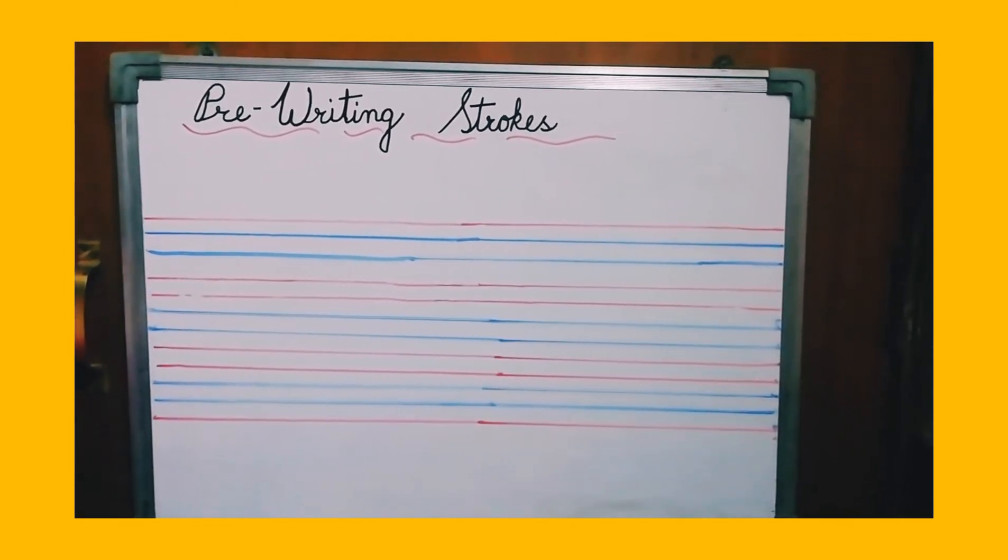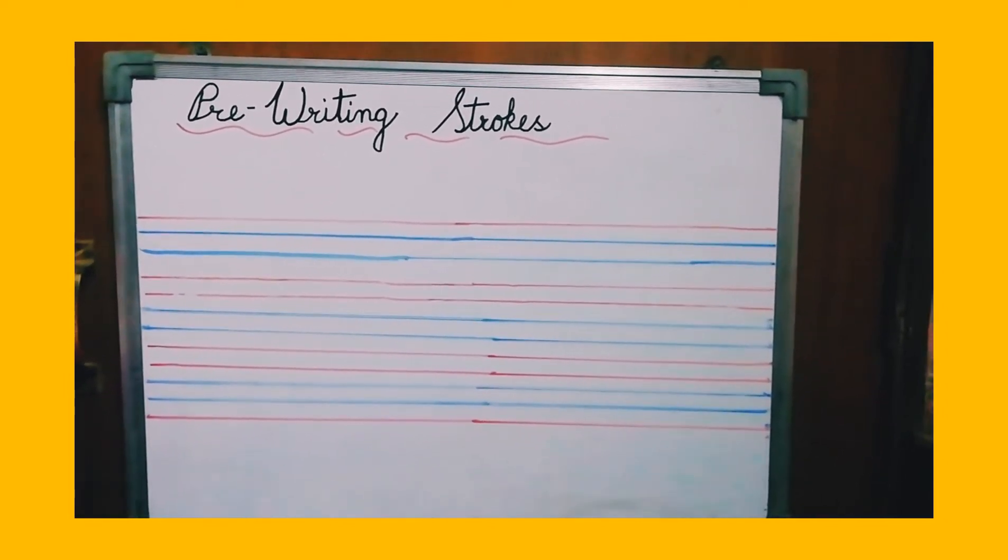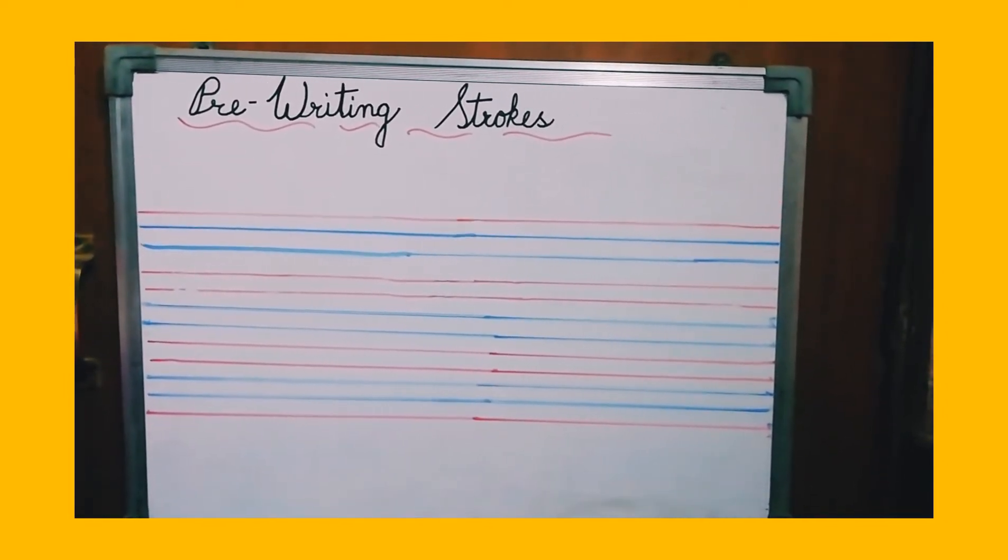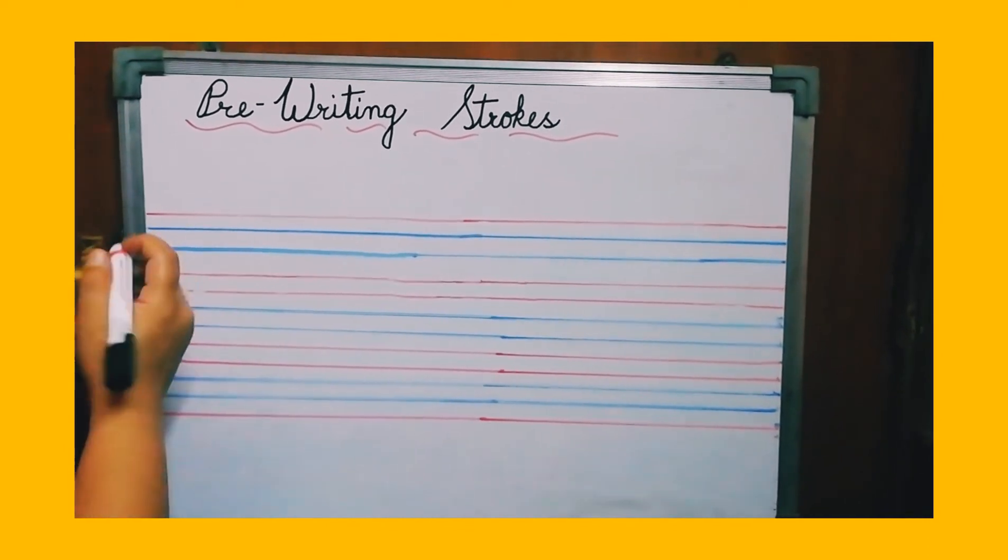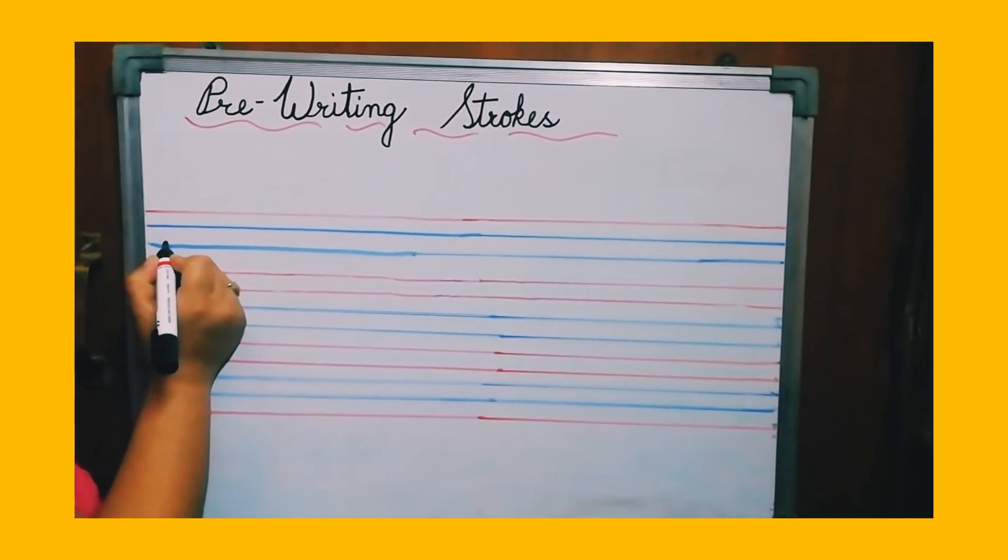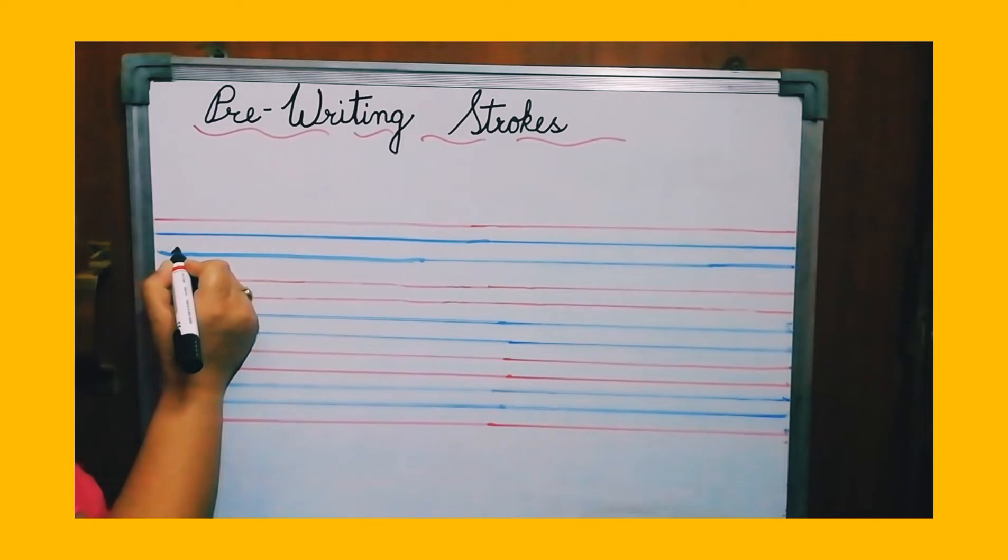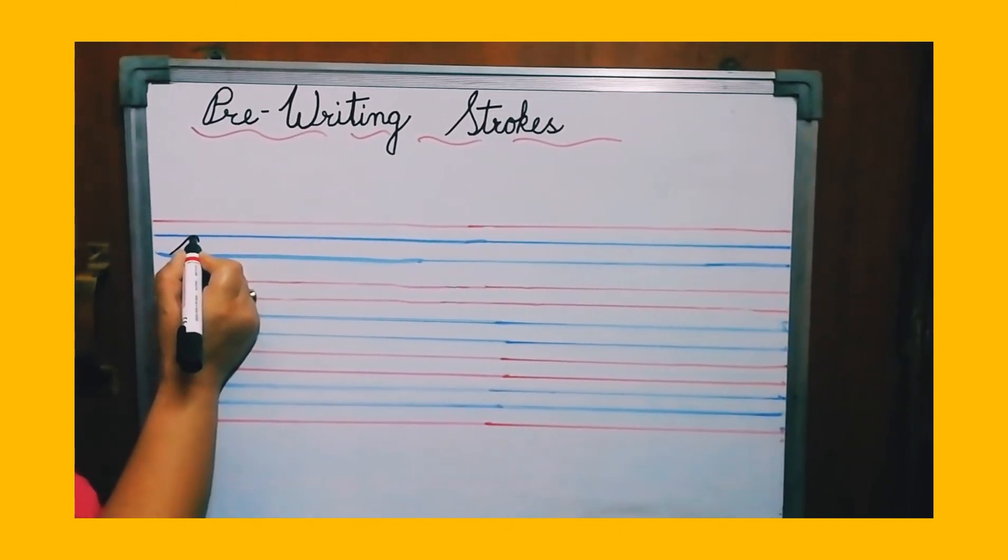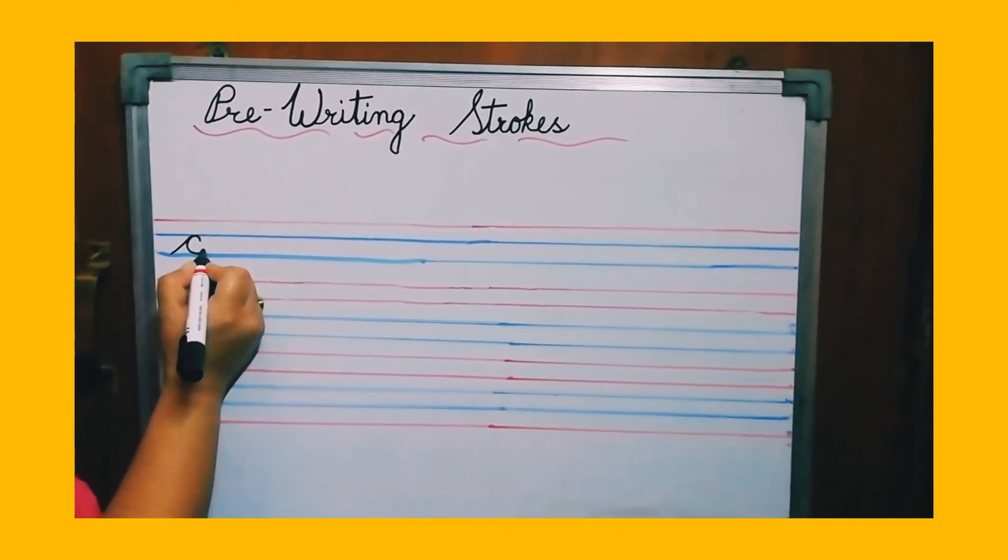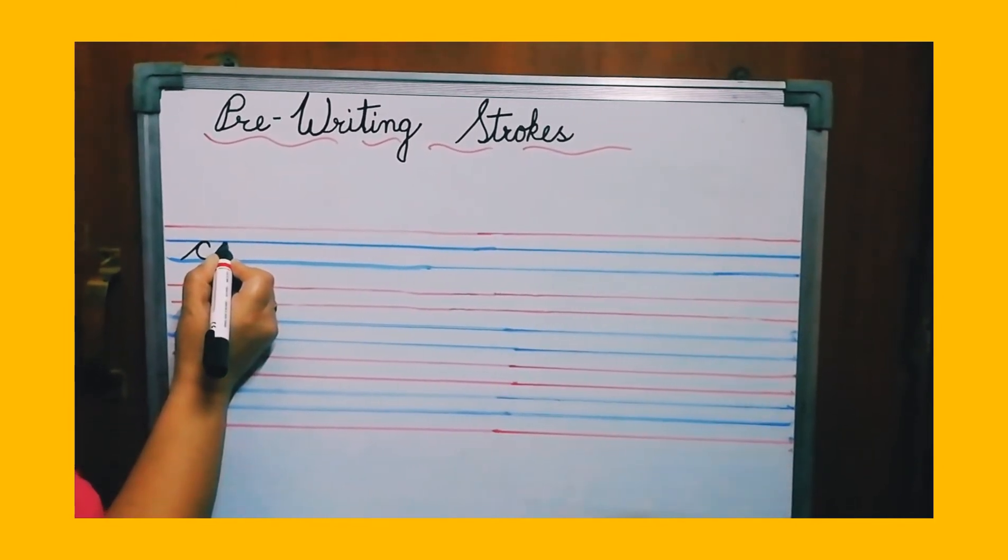When you are writing strokes, you should not raise your pencils. So here comes your first stroke. We will start from here. So here, go up, take a bend, come back. Don't raise your pencil. Pull a tail.